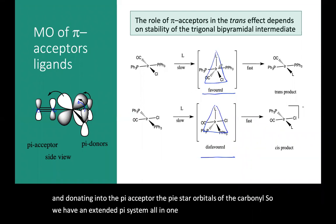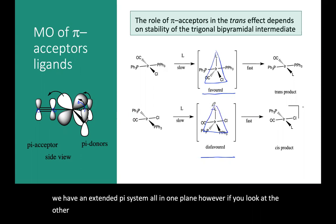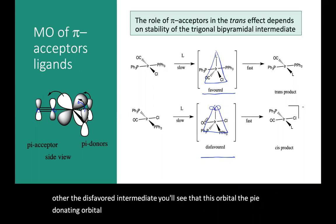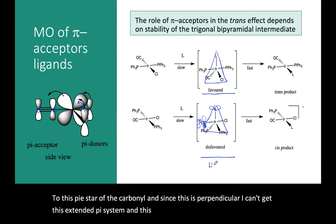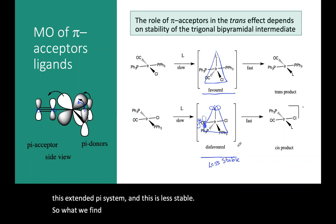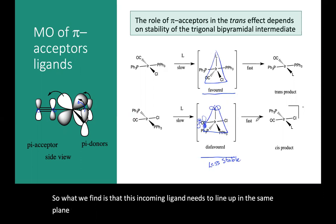However, looking at the disfavored intermediate, you'll see that the pi donating orbital — not the sigma one — is not aligned. It's perpendicular to the pi star of the carbonyl. Since it's perpendicular, we can't get this extended pi system, and this is less stable. So what we find is that the incoming ligand needs to line up in the same plane as the pi acceptor, and that results in the trans product.